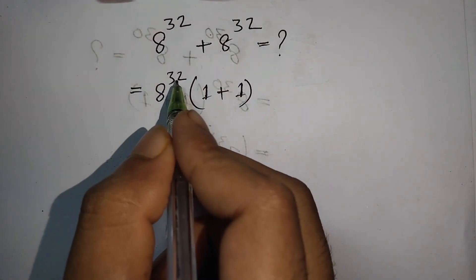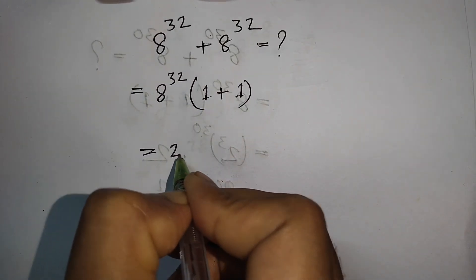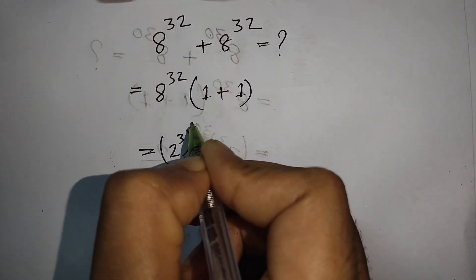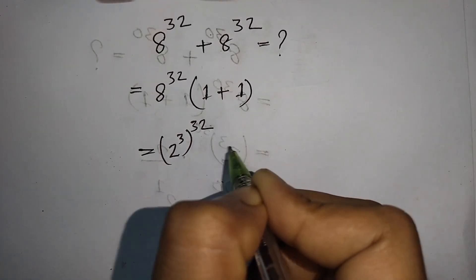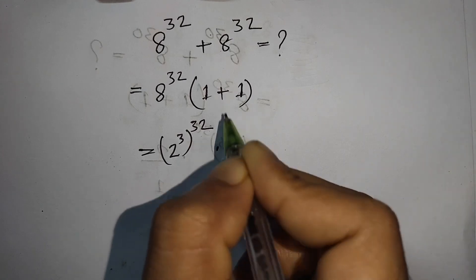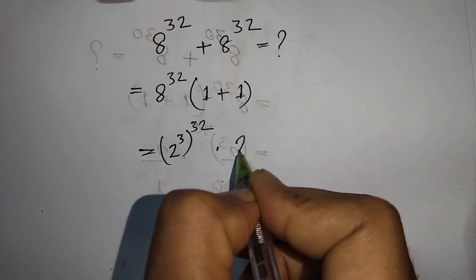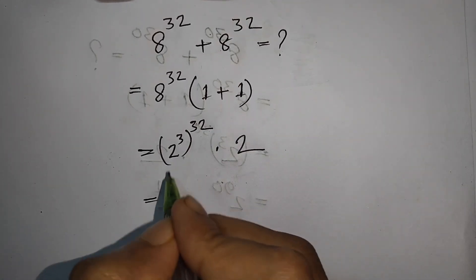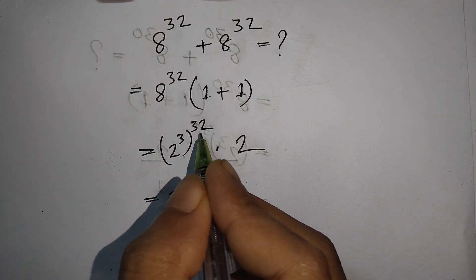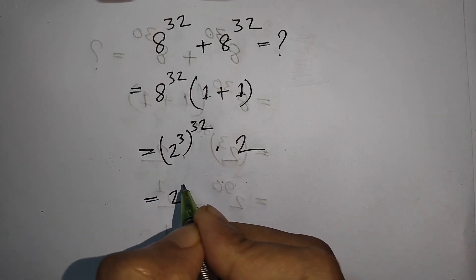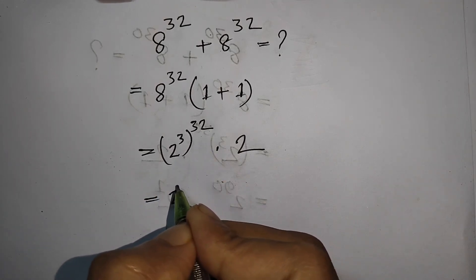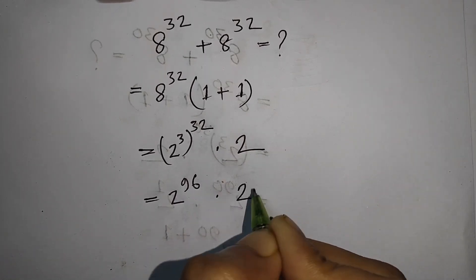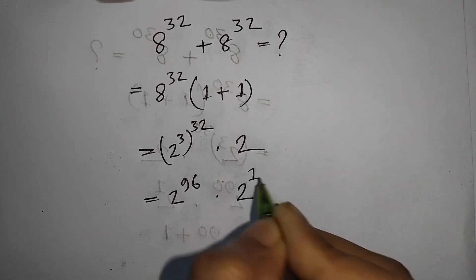8 power 32 is the same as 2 to the power 3, bracket power 32. So we can write here 2 to the power 32 times 1 plus 1, that means 2. Then 2 to the power 3 times 32, that means 96.